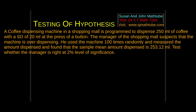I will give you the essence of the question. The story is about a coffee dispensing machine. It is programmed to dispense, on average, 250 ml. But these are machines — it will always be plus or minus, it won't be exactly 250. They have allowed a standard deviation of 20 ml.